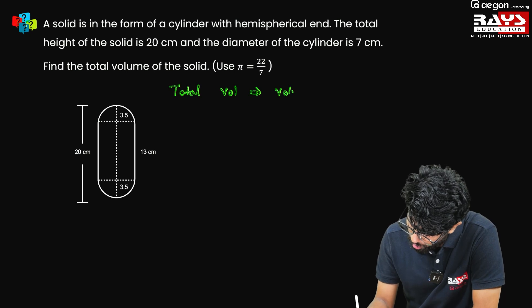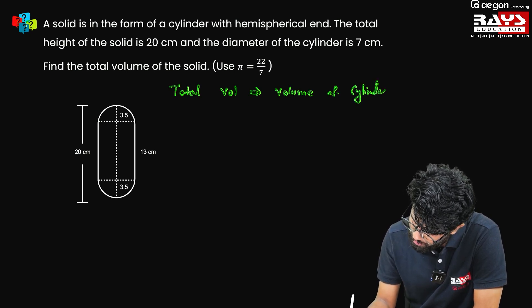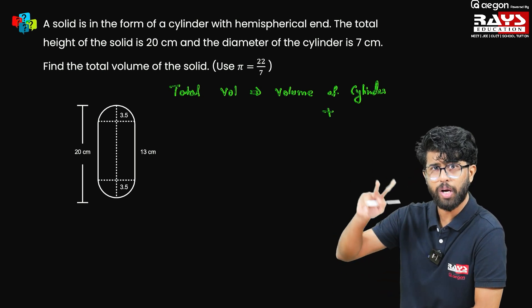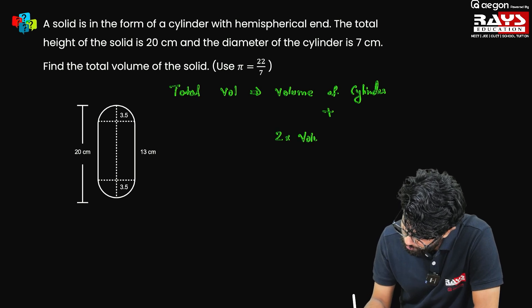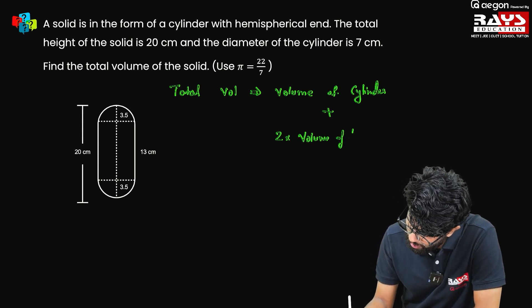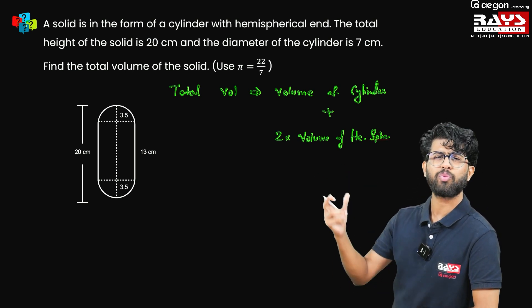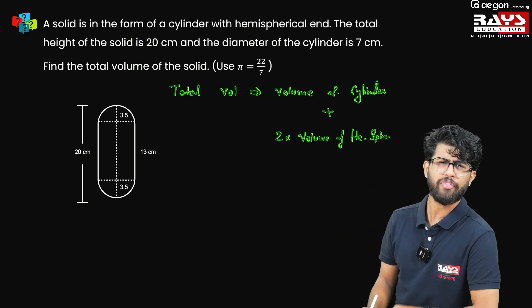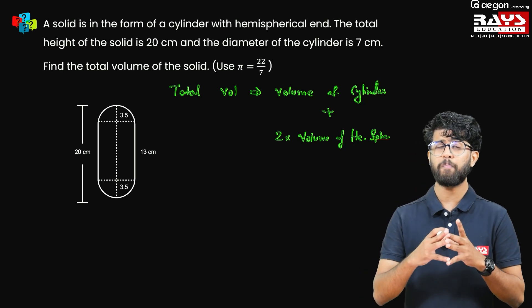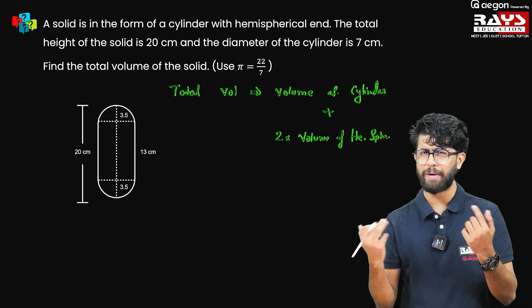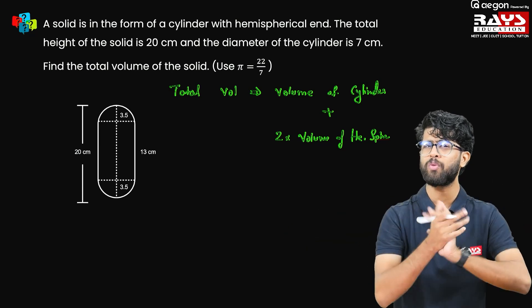Total volume equals volume of cylinder plus two hemispheres. Since they are two identical hemispheres, that computes to two into volume of one hemisphere. What is the formula for the volume of a cylinder? The volume is always the product of the base area and the height. The base of the cylinder is a circle, so area of circle is π r², then multiplied by height h. So π r² h is the volume of the cylinder.